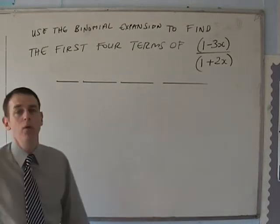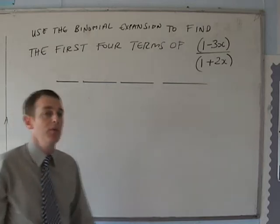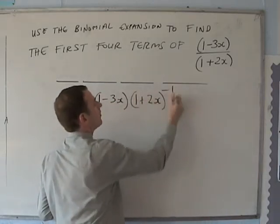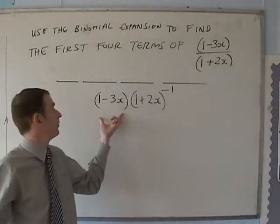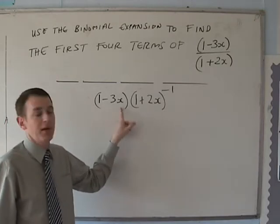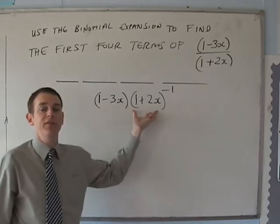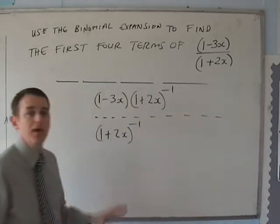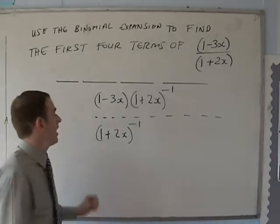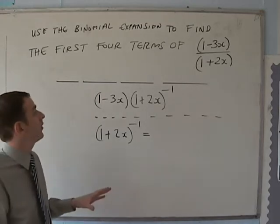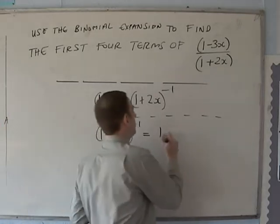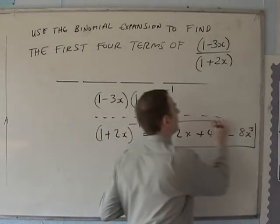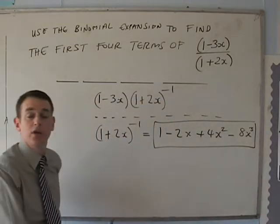Use the binomial expansion to find the first four terms of (1 − 3x)/(1 + 2x). The first thing we do is rewrite this as (1 − 3x) × (1 + 2x)^(−1). Now the (1 − 3x) is just a normal bracket — it has nothing to do with the binomial expansion, we don't have to expand that at all. But we do need to expand (1 + 2x)^(−1). We expand it exactly the same as normal, write down the formula, and we only need to use the first few terms up to x cubed.